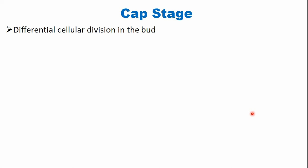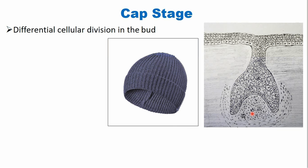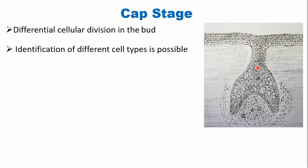The next stage is the cap stage of tooth development. In the cap stage, there is differential cell division in the bud — meaning unequal division in some part of the bud — that leads to the formation of a cap-like structure. You can see that there are a variety of cell types: the cells present in the center of the cap are different from those below the cap and from those lining the outer part. This phenomenon is known as histodifferentiation, and there is more histodifferentiation compared to the previous bud stage.